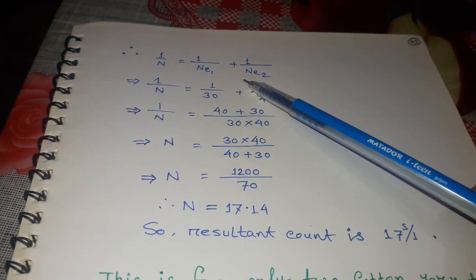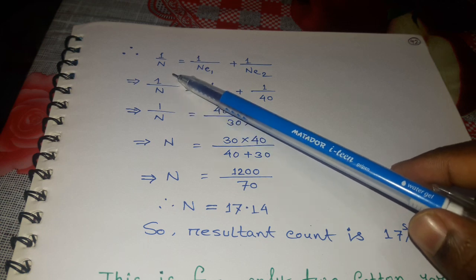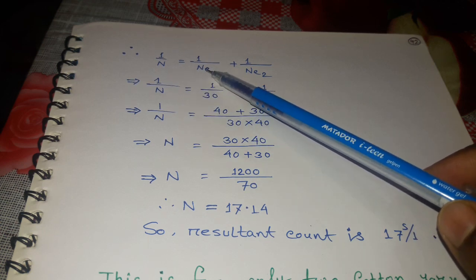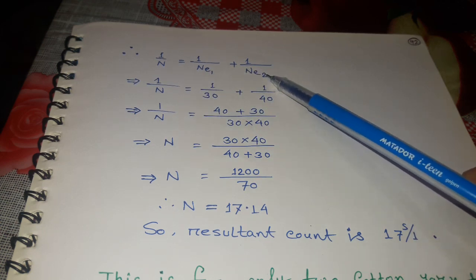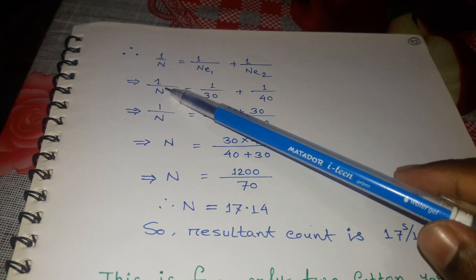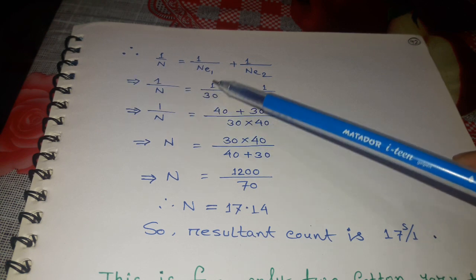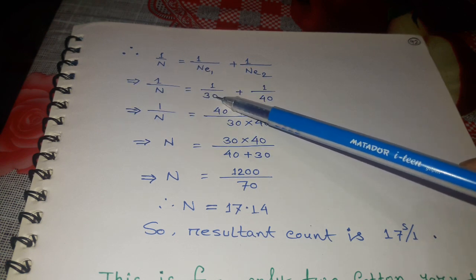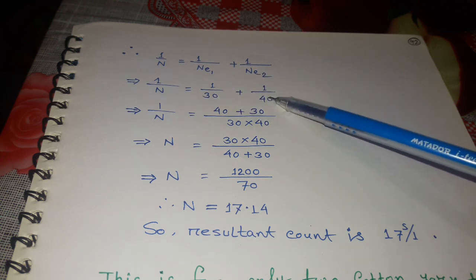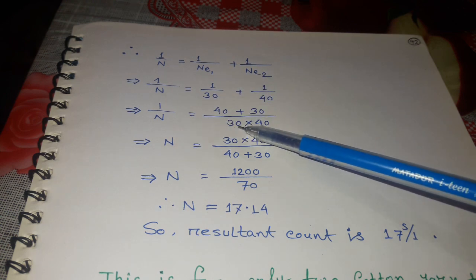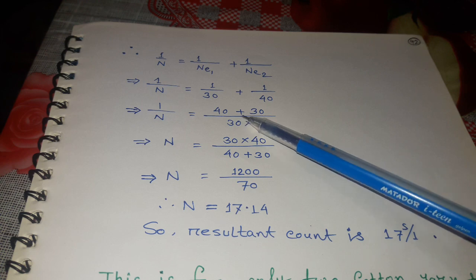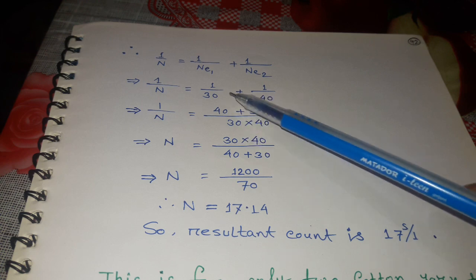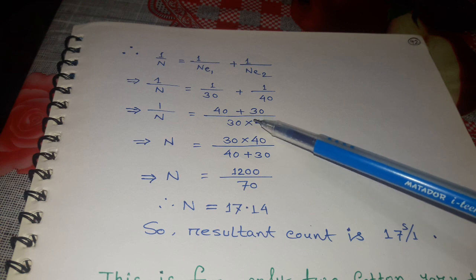The equation is 1/N = 1/Ne1 + 1/Ne2. Substituting the values: 1/N = 1/30 + 1/40. Now we solve this.